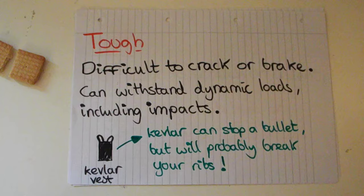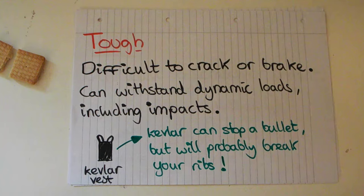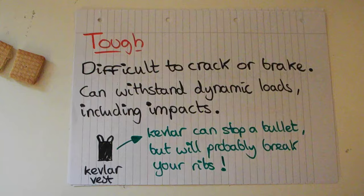Something that's tough is difficult to crack or break — it can withstand dynamic loads such as impacts. Like a Kevlar vest: that's going to stop a bullet not necessarily because it's incredibly strong, but because it's good at dispersing the force around the entire object. So although some characteristics sound similar they are actually different — a Kevlar vest is tough because it disperses the force, allowing it to take a lot of dynamic loads.